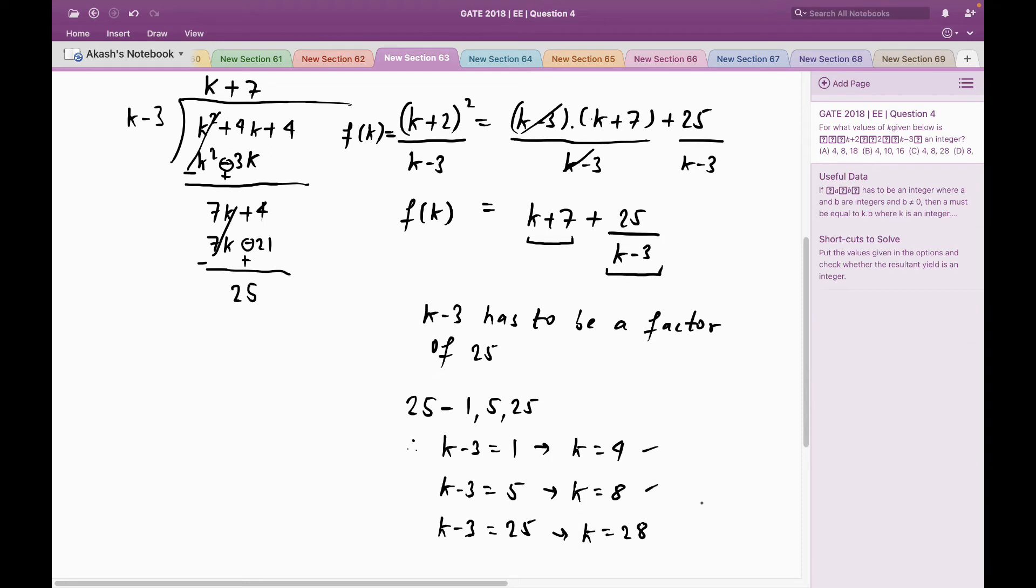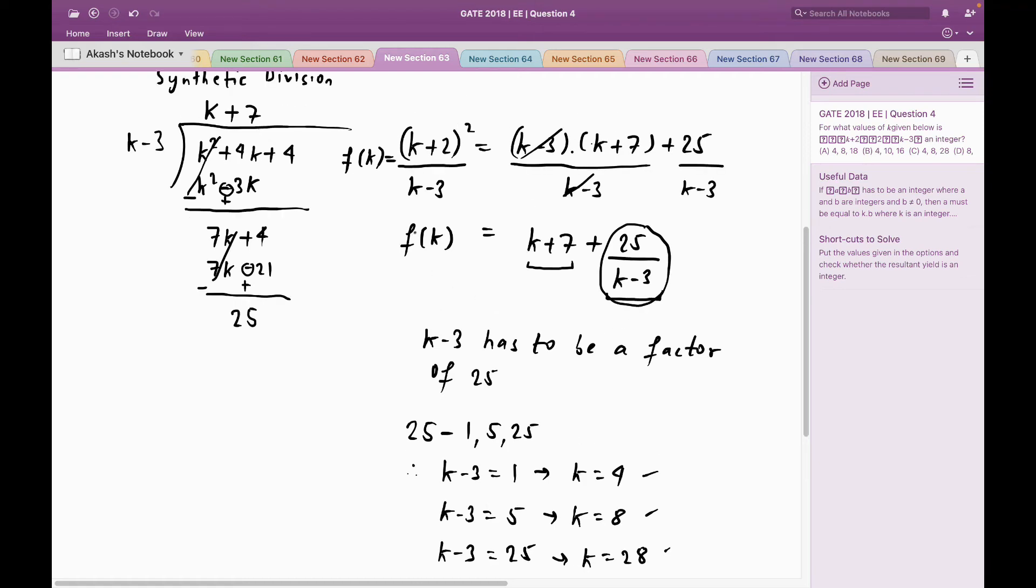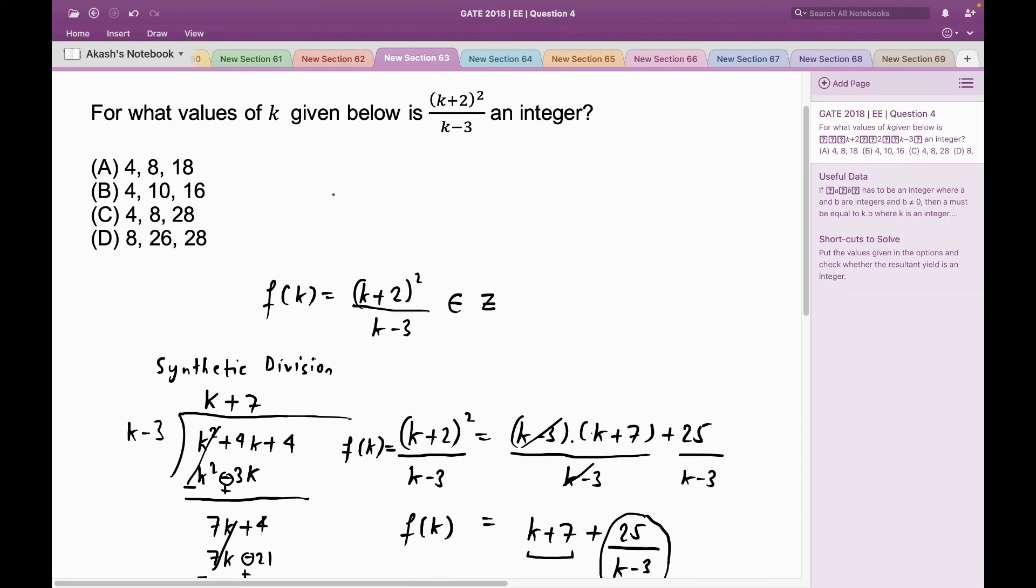Now for these three numbers, the denominator would be a multiple of 5 and this whole fraction would be an integer. So 4, 8, and 28 should be the values to make this fraction an integer, which matches with option C. So option C is the right answer.